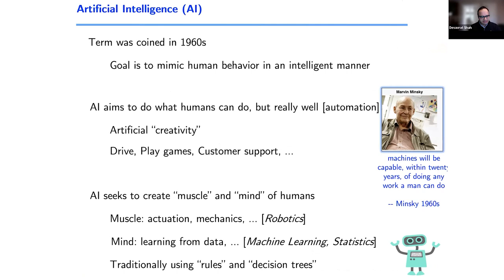The term AI was coined in the 1960s with the mission that the goal of AI is to mimic human intelligent behavior. It was coined in a manuscript by Marvin Minsky and his collaborators, who said machines would be capable within 20 years of doing everything a human can do. I'm still waiting for those 20 years — and will likely continue to wait. While it's been an exciting endeavor, a lot can be done but a lot may not be done.